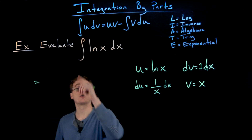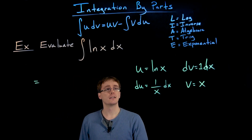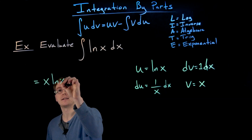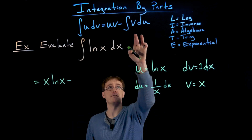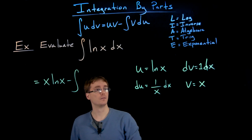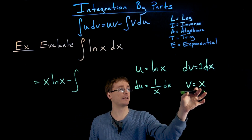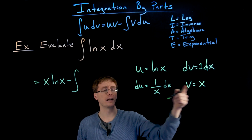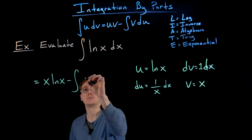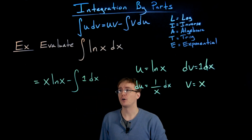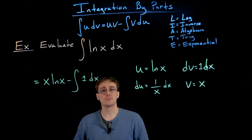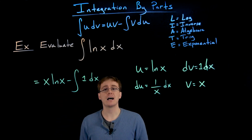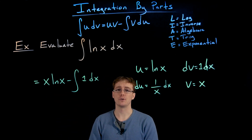We know our original integral — the integral of the natural log of x — can now be expressed as u times v, which is x times the natural log of x, minus the antiderivative of v times du. v is x and du is 1 over x dx; multiplying x and 1 over x gives x over x, which simplifies to 1. So we still have that differential of x, giving us the integral of the constant 1.